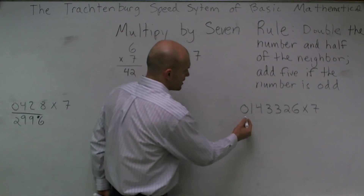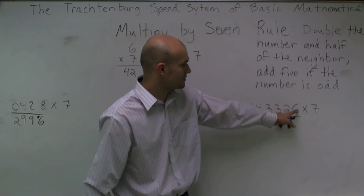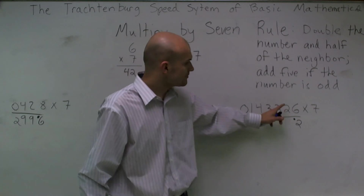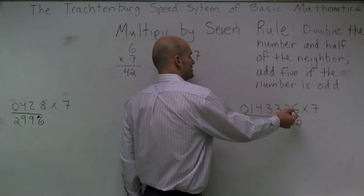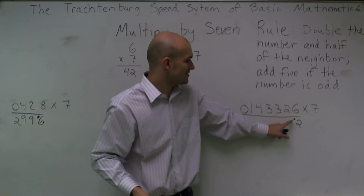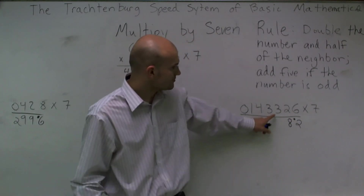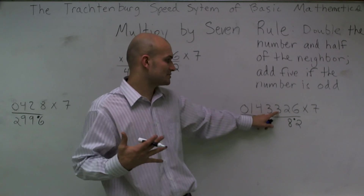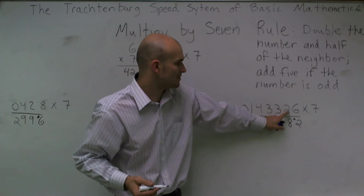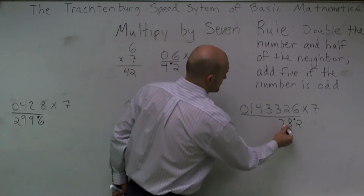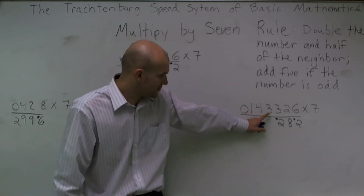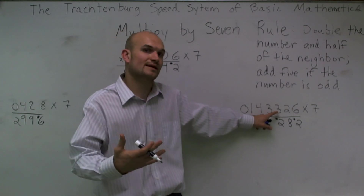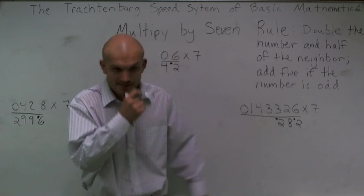Let's go ahead and look at the last number. I'll put an underline here and work through it. I double 6, which gives me 12 — writing 2 with the carried 1. Now I double 2, which gives me 4, add half of the neighbor 6, which is 3. So 4 plus 3 is 7, plus my carried 1 gives me 8. Then I look at 3 — it's odd, so I double it to get 6, add 5 to get 11, add half of neighbor 2, which is 1, giving me 12, plus my carried 1. Then I look at the next 3 — odd again — double it gives 6, add 5 gives 11, add half of neighbor 3 which is 1, giving me 12, plus my previous carried 1 gives 13.